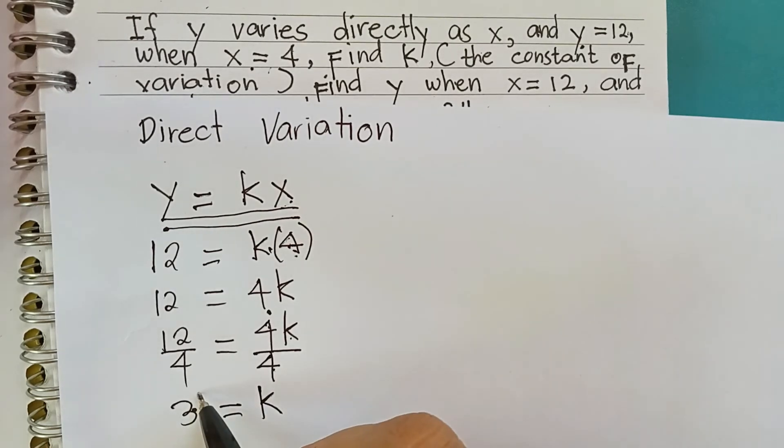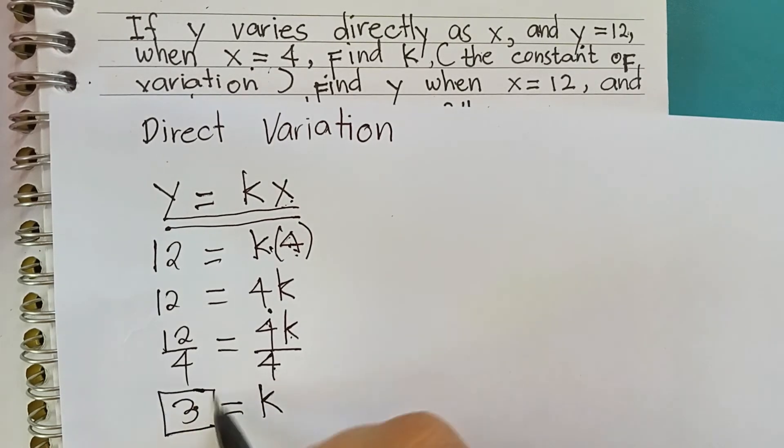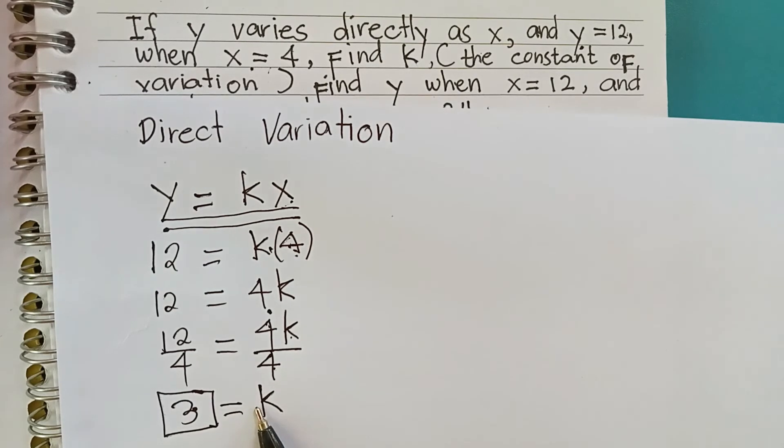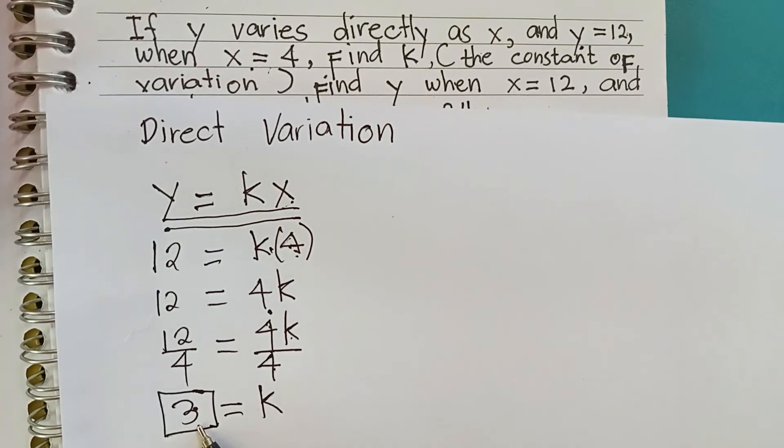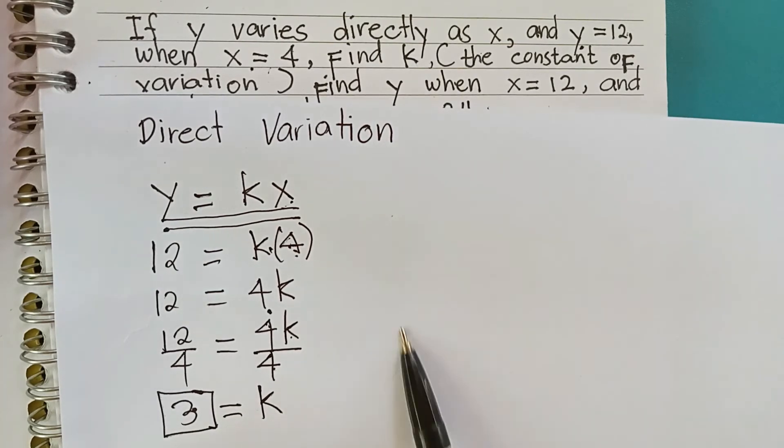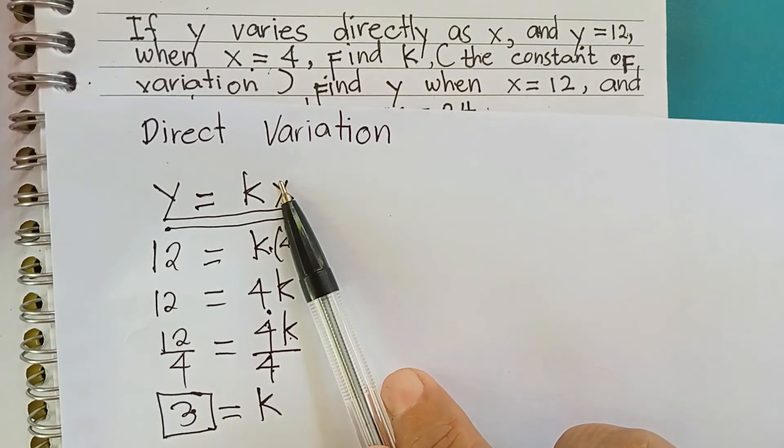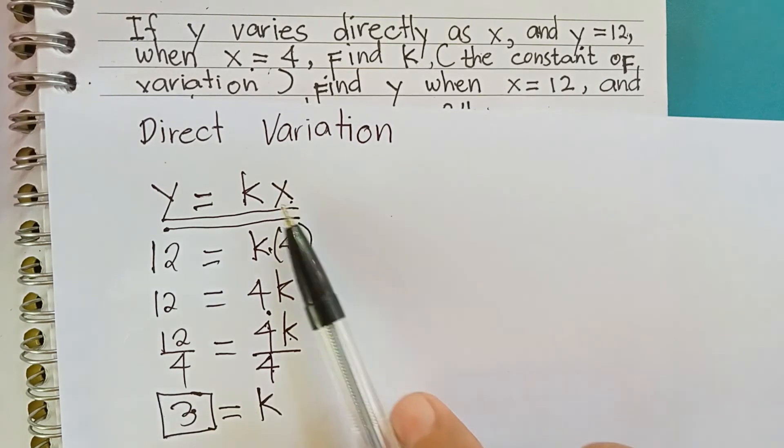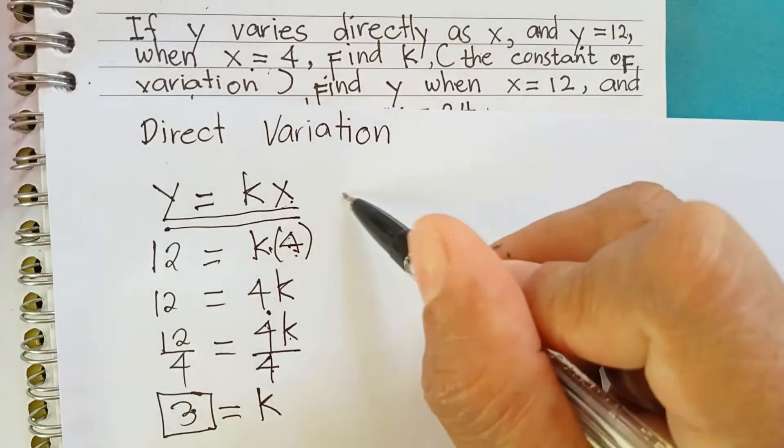So, this is our constant of variation. Now, kaning value sa k, which is 3, Aton ni siyang i-substitute diri ah sa formula sa direct variation in order to get the equation. Ang equation na nag-represent sa relationship between x and y.